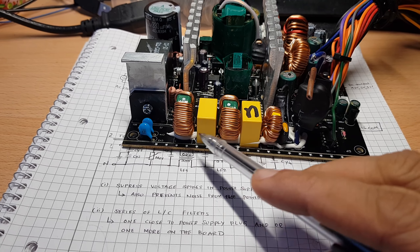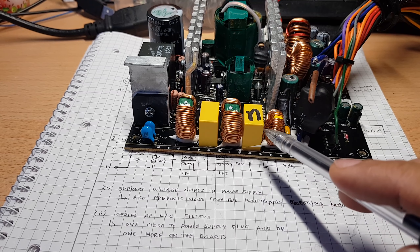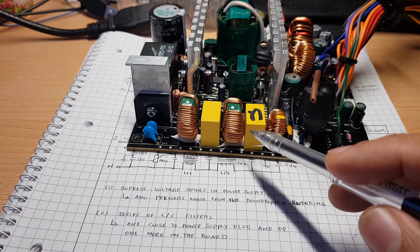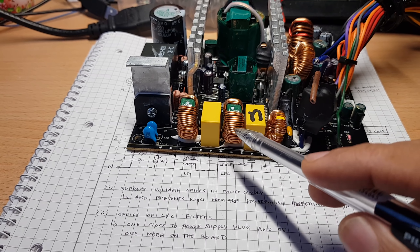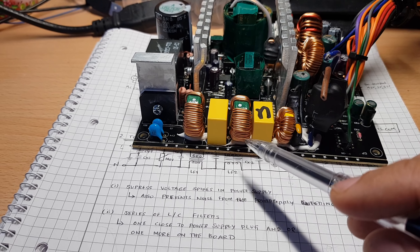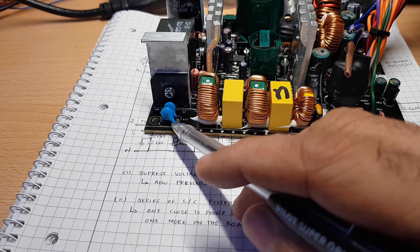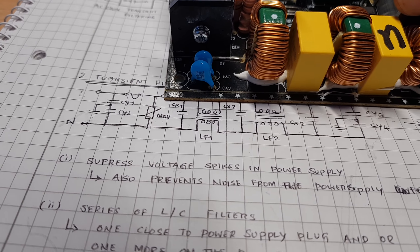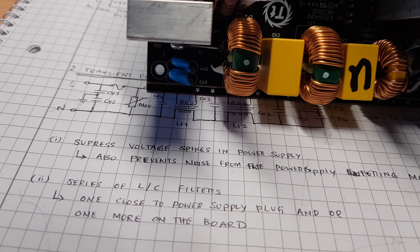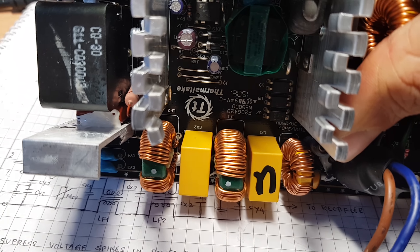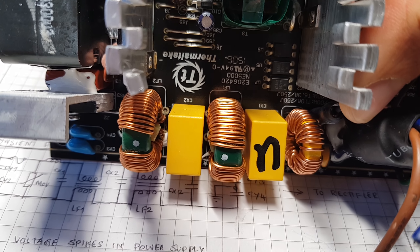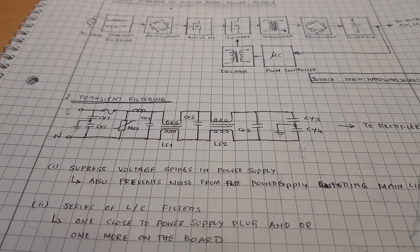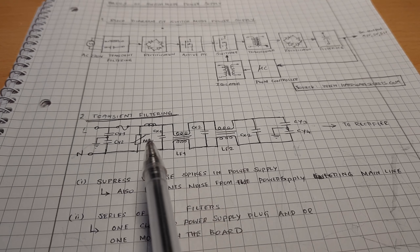Then you have a fuse, then the inductors and the Y capacitors — two pairs of inductors and capacitors. Cheaper units may have only one or might skip this section. Then you have another Y capacitor designated as CY3. You can also see CX1, L1, CX2, and so forth, just like in the general scheme.